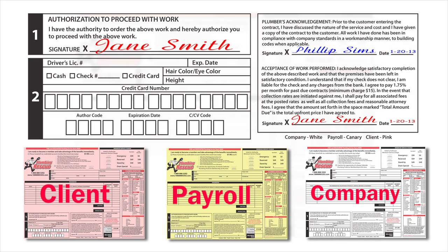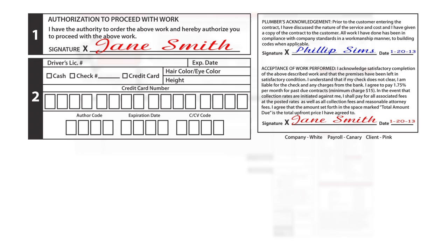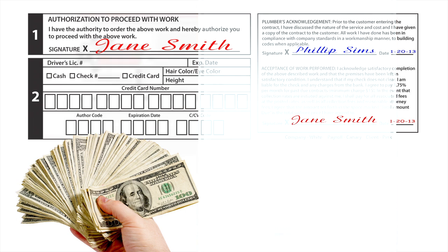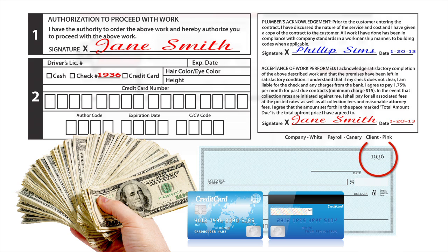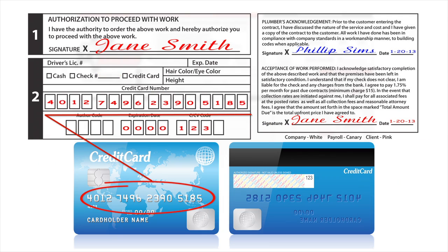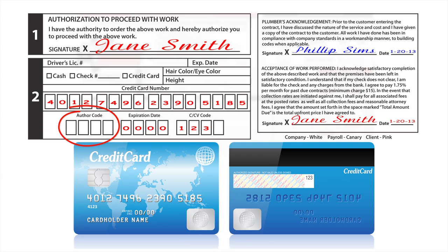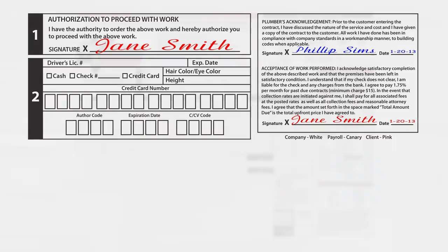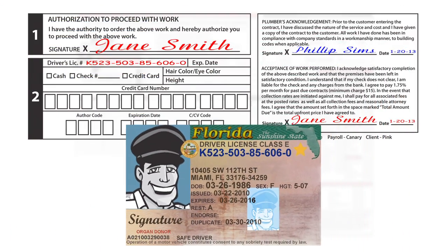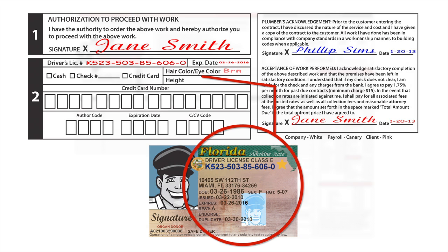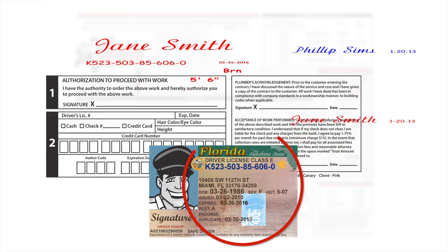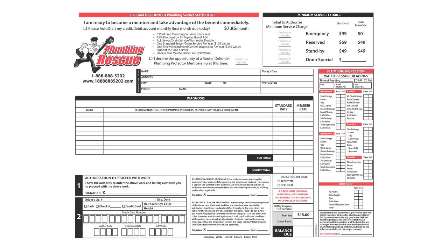In the payment section, determine how the customer will pay for service: cash, check, or credit. If a check, write the check number. If credit, write the 16-digit card number, authorization code, expiration date, and CV code — the small number on the back of the credit card. Additional information needed is the driver's license number, expiration date on the license, hair color, eye color, and height. And that's how you fill out the invoice form.